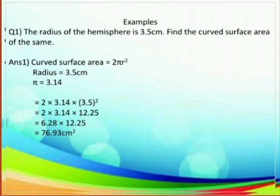Now let us look at some solved examples to understand the formulas better. The first question says that the radius of a hemisphere is 3.5 cm, and we have to find the curved surface area. We know that the formula for the curved surface area of a hemisphere is 2π r². Here, r = 3.5 cm and π = 3.14. On putting the values, we get 2 × 3.14 × (3.5)², that is 2 × 3.14 × 12.25, which equals 76.93 cm². Thus, the curved surface area of a hemisphere with radius 3.5 cm is 76.93 cm².